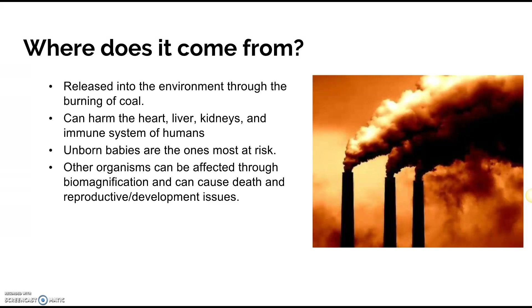Other organisms can be affected through biomagnification — and that's really how mercury gets to humans. As it moves up the food chain, biomagnification increases the concentration of the mercury. Since humans are at the higher end of the food chain, we experience a higher concentration, which means the LC50 becomes a bigger factor because we're experiencing a much higher concentration of that mercury.